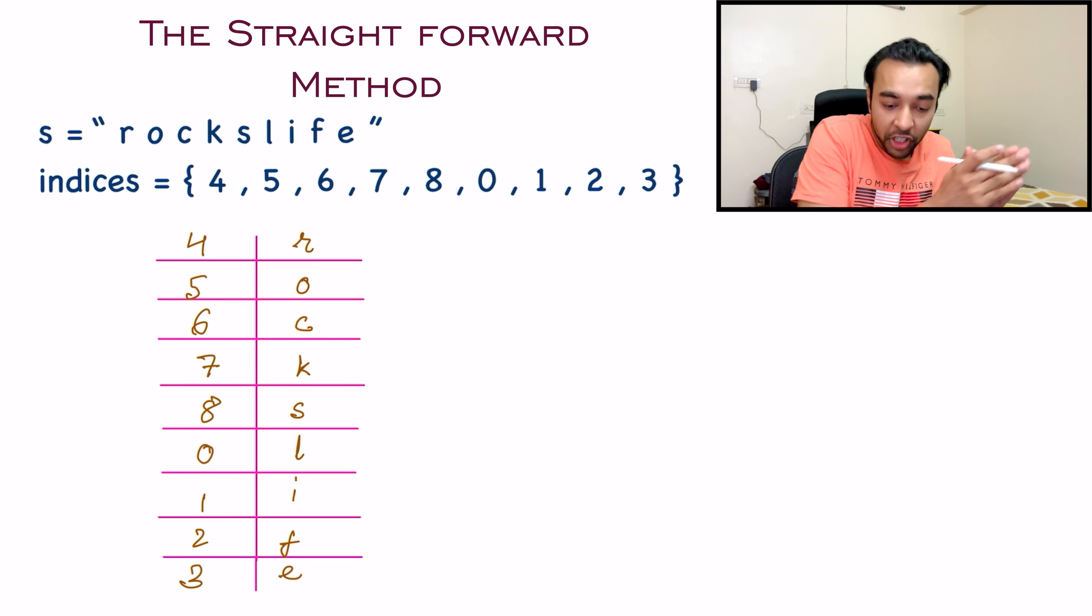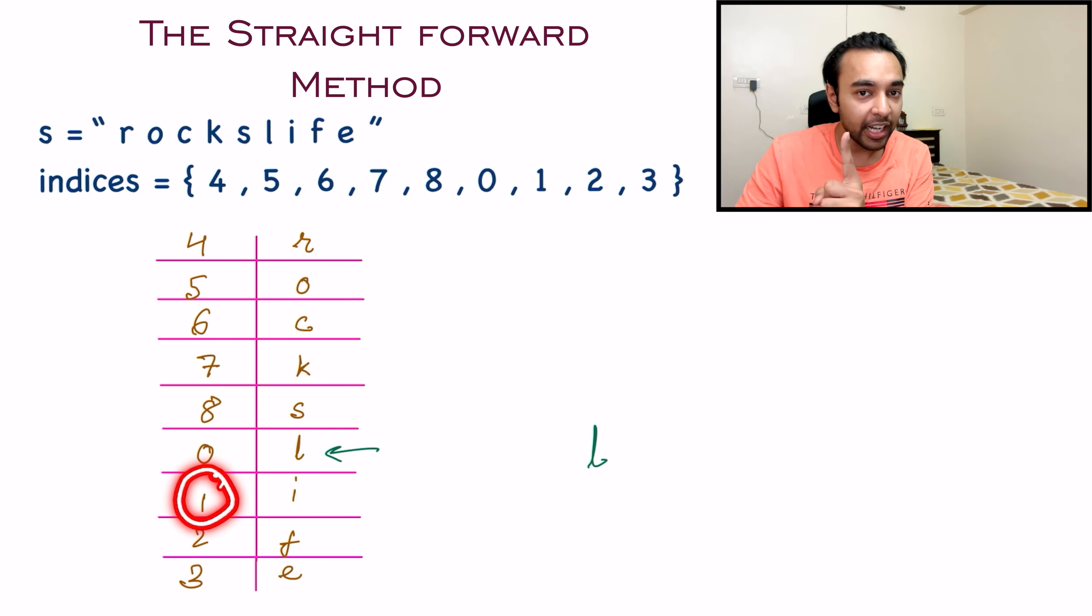Once you have this map ready, what will you do? You need to form your string from the zeroth index, and then you can go character by character. So first of all, you look at the zeroth index and then get the character over here. You get an L. Next, you will try to search for the first index and then get the character over here. So you get an I. Similarly, you will keep on moving ahead and you will get your complete string. And this method works. It will give you a correct answer every time.